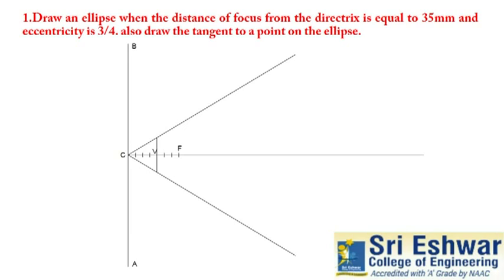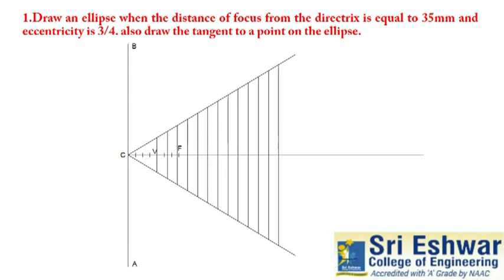Now we have to mark from vertex point. Divide this into equal segments like this. It may be 10mm or 15mm, it depends upon our convenience. Divide this into equal segments to draw ellipse.